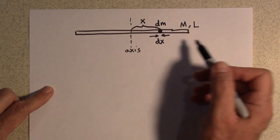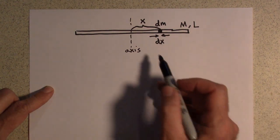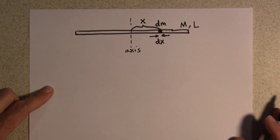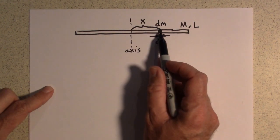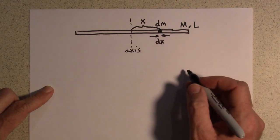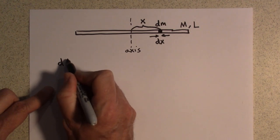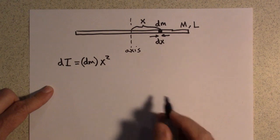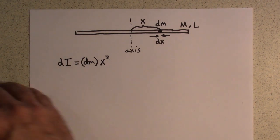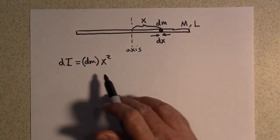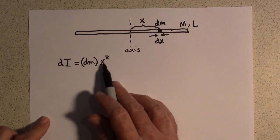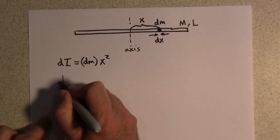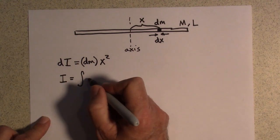We make dx so small that dm can be treated as a point mass located at distance x from the axis. The rotational inertia of this tiny element is dI = dm·x². We then sum all these contributions: I = ∫x² dm, to get the total rotational inertia of the entire stick.